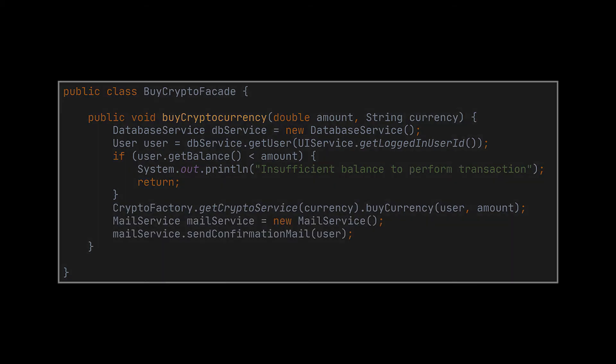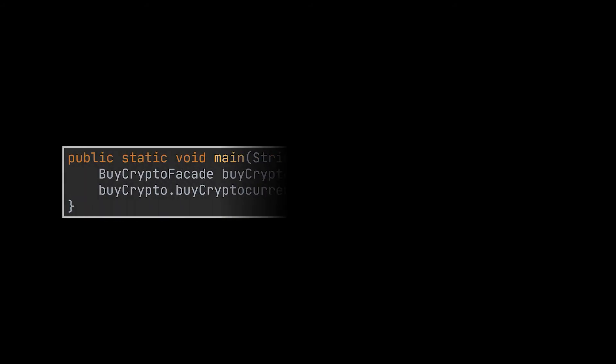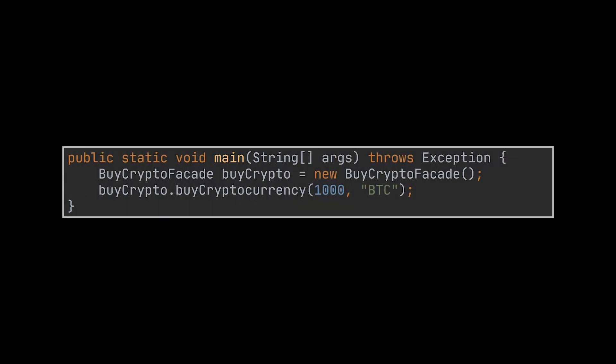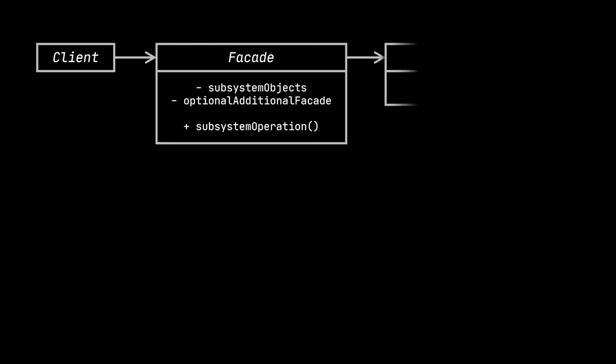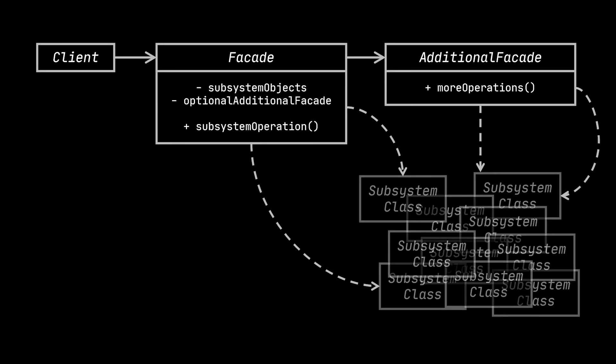Now, as you can see, the client code does not have to go through all of those previous steps anymore. They just provide us with the amount they want to invest and which cryptocurrency they want it invested in, and we have them covered. Okay, let's go ahead and take a look at the structure or class diagram of the facade design pattern while trying to relate it to the example we just implemented.